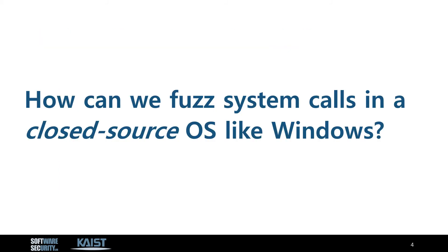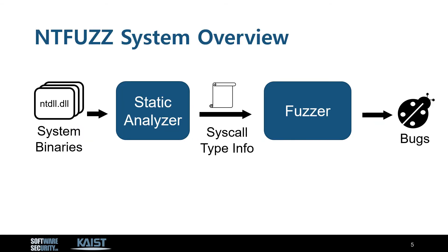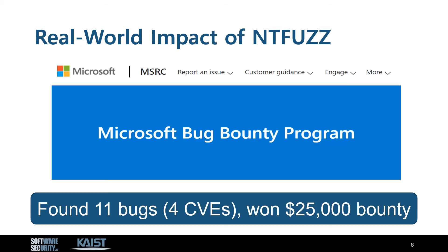Then, how can you fuzz syscalls in a closed-source OS like Windows? For this, we propose Anti-Fuzz, which statically analyzes Windows binaries to obtain syscall type information for fuzzing.